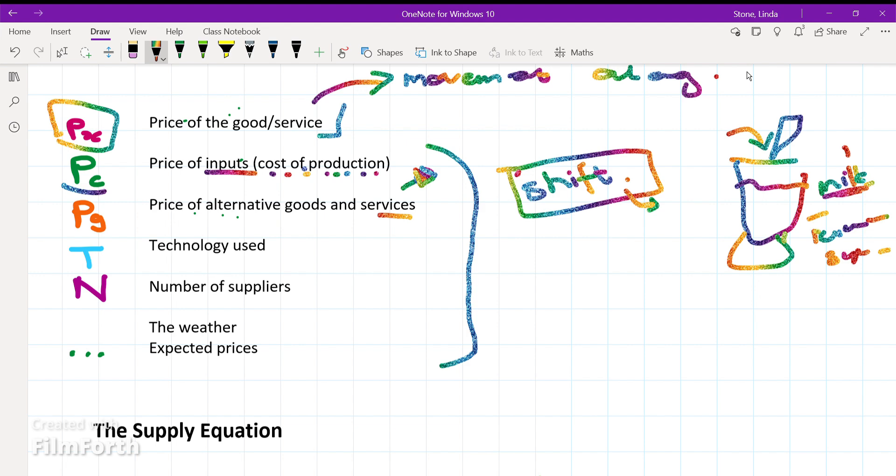But do not confuse this with the price of inputs. The price of inputs would be something like chicken feed, which would mean that my chickens will be more expensive to produce because it costs more to produce them. And the first one, Px, is the price of the chicken itself.